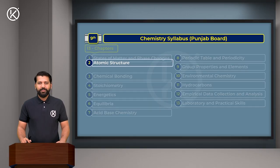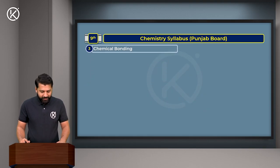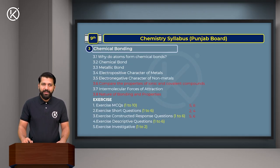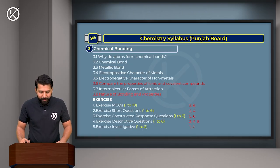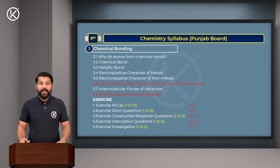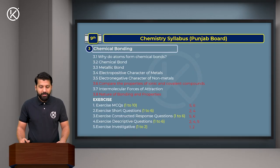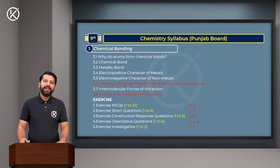In Chapter 3 - Chemical Bonding, the excluded topics are 3.6 - Comparing the Properties of Ionic and Covalent Compounds, and 3.8 - Nature of Bonding and Properties. The excluded exercise questions are: MCQs 5 and 6; Short Questions 2 and 4; Constructive Response Questions 5 and 6; Descriptive Questions 2, 4, and 5; and Investigative Questions 1 and 2.